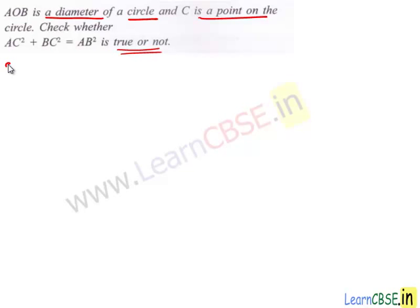So let's work out the problem. If AOB is diameter of a circle, then O is the center. And if we take C as any point on the circle, we will get a triangle ABC. Let's draw the figure.